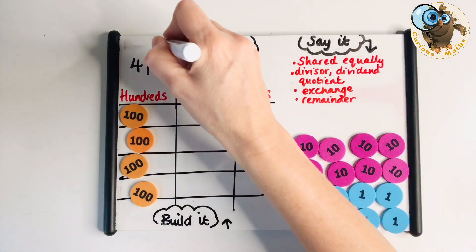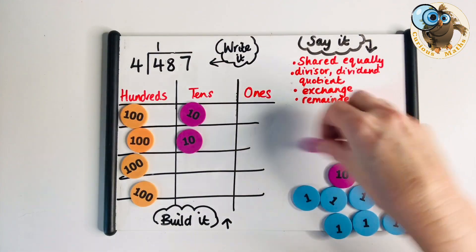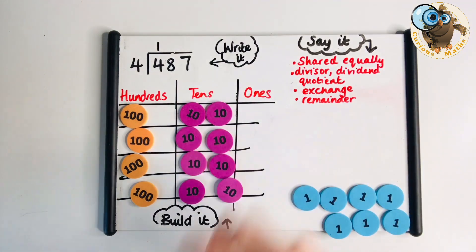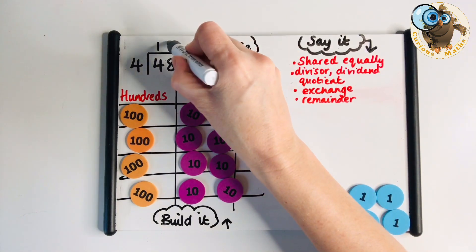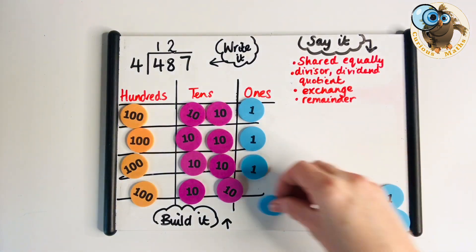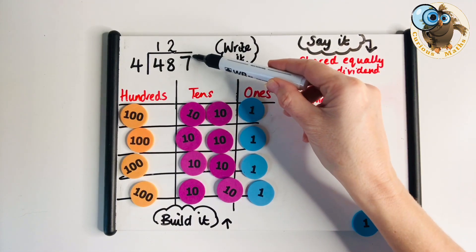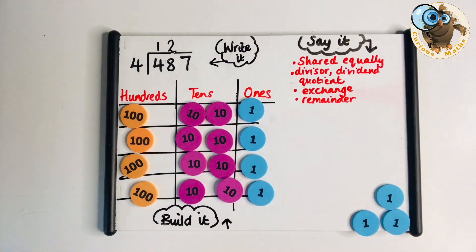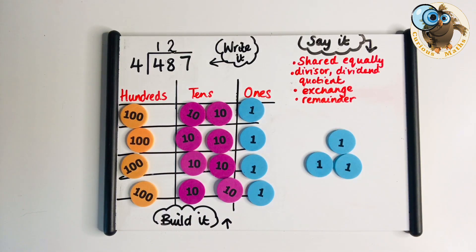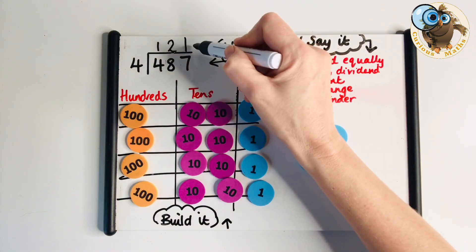You can see I've made my build and because I'm dividing by four, I draw four lines. I start in the hundreds column and share my hundreds. How many hundreds has each person got? They have 100. Next the tens column, I share them equally. How many tens has each person got? They have two tens. Finally, I go to my ones column and I share out my ones.